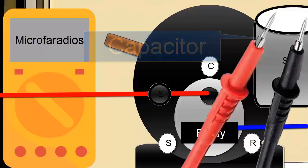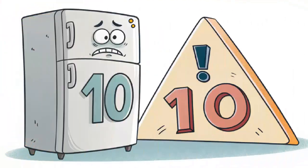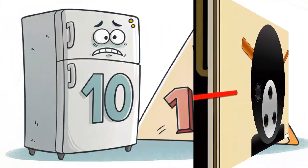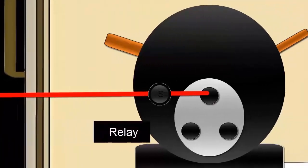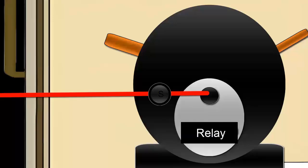9. Issues with the start relay. The relay allows non-inverter compressors to start. If it's faulty, the compressor may shut off quickly due to insufficient power to operate continuously.